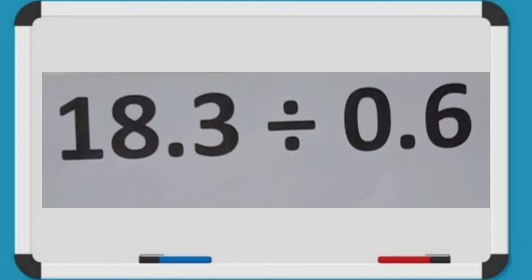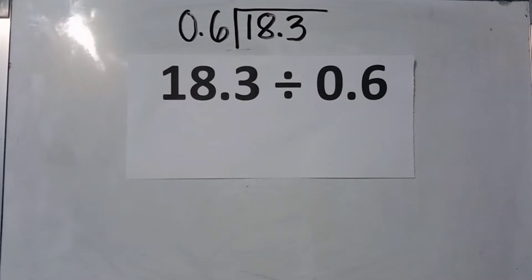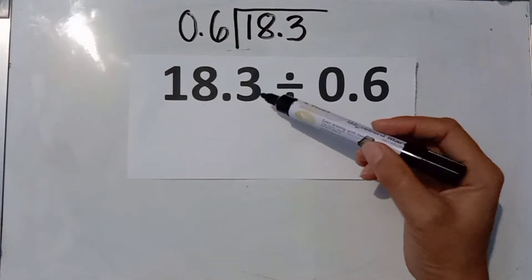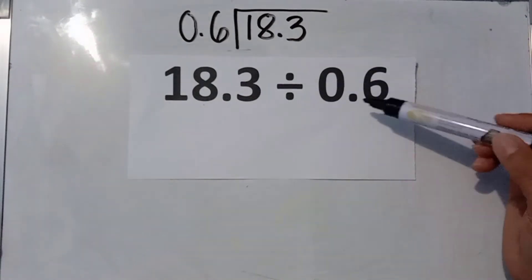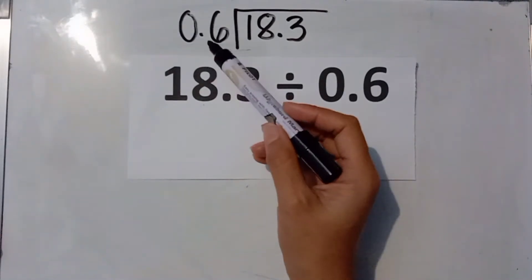Next example: 18 and 3 tenths divided by 6 tenths. 18 and 3 tenths is the dividend and 6 tenths is the divisor. Using the division bar, 18 and 3 tenths is written inside, while 6 tenths is written outside the division bar.